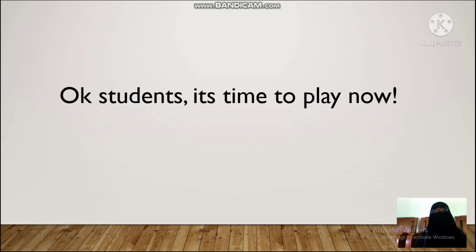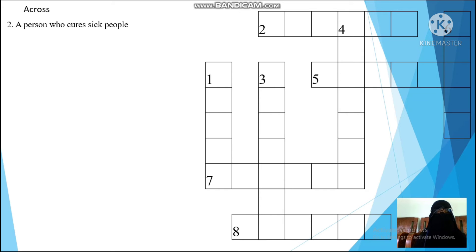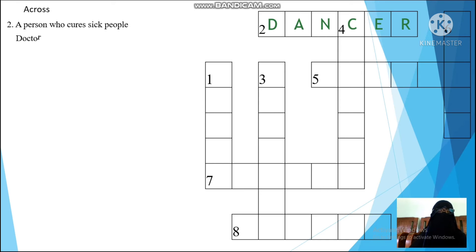It's time to play now! Let's play the puzzle. Number one across: a person who cures sick people. What kind of profession is it? It starts from D. Do you know the answer? Look at the clue — the answer is doctor: D, O, C, T, O, R. Next, down: a person who flies an airplane. It starts from P. Is the answer pilot? Look at the clue — pilot, that's right, you're correct!